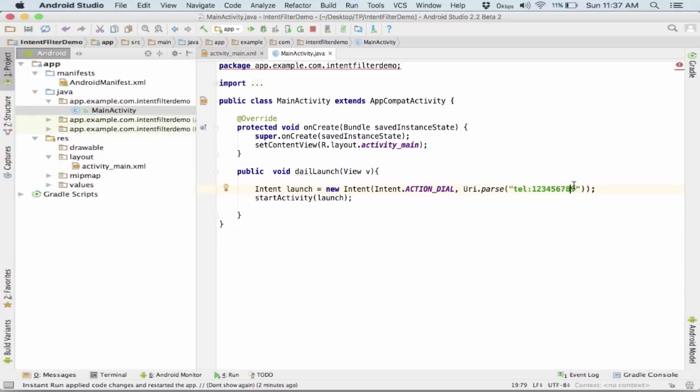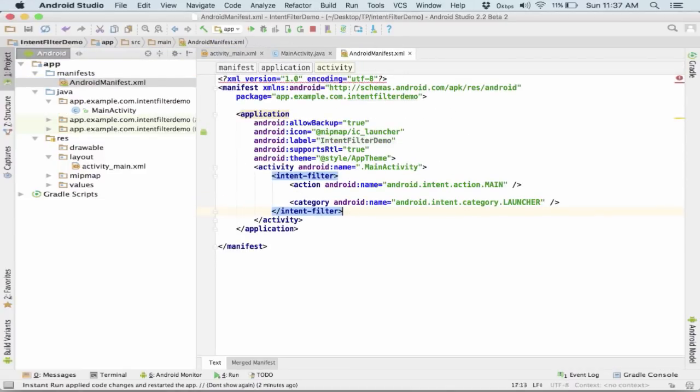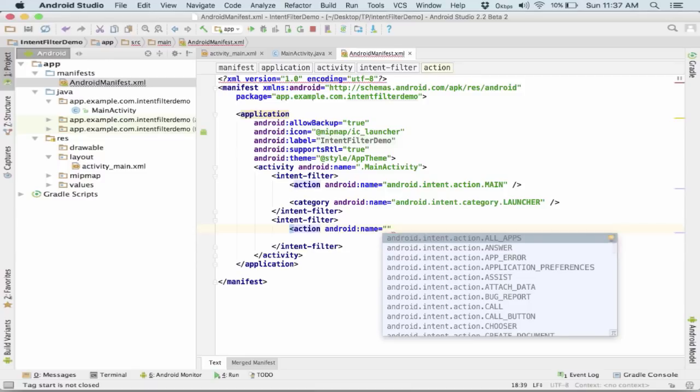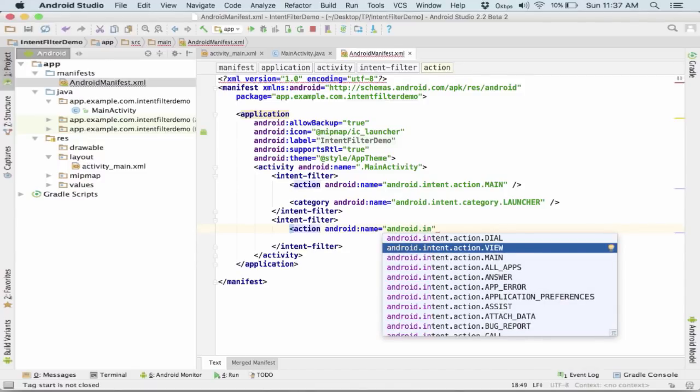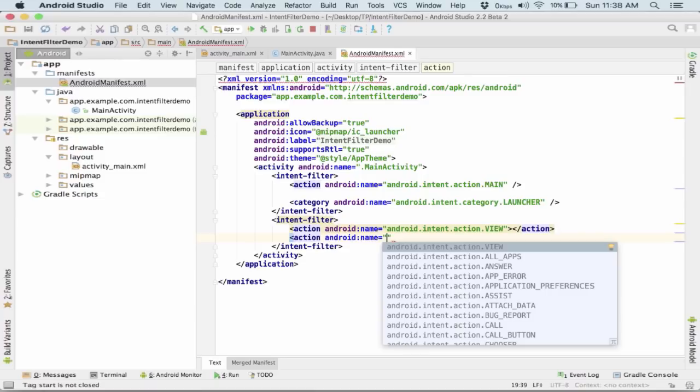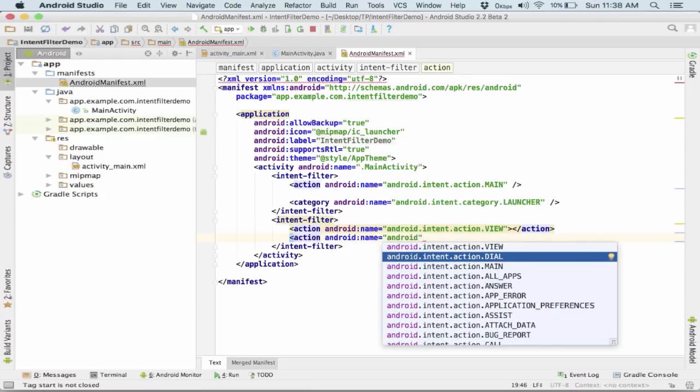Now what we are trying to do is add our application to the dialer. How do we do that? For that we go to the manifest file and here we need to add another intent filter. In this filter we first write the action. The name for this android action is android.intent.action.view. Then we need another action, android.intent.action.dial.